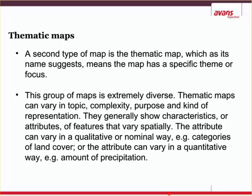Thematic maps, as the name suggests, have a theme or focus. They can be anything, and most of the maps you'll be generating for this project will be thematic because you're researching something — you're making a map to show your results. They can be qualitative or nominal: for example, categories of land coverage, where a farm would be brown and nature would be green. Or they can be quantitative: for example, rainfall — if one area rains more it might be red, and if it doesn't rain a lot it might be blue. This is exactly what they do on weather maps on the news.